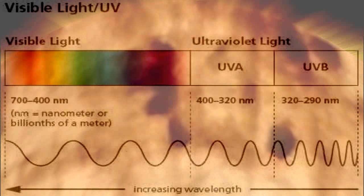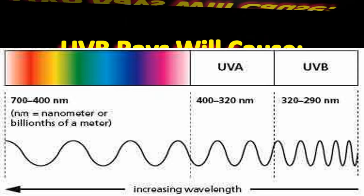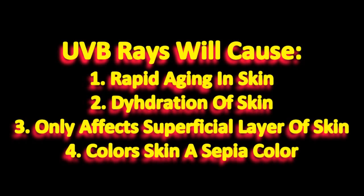After 500,000 hours of research, scientists concluded: the coloring of the shroud is due to rapid aging of the linen flax through dehydration. Only the superficial layer of the linen fibers are colored, and they were colored a sepia color. UVB rays meet all of those unique characteristics — they cause rapid aging in skin, they cause dehydration of the skin, they only affect the superficial layer, and they color skin a sepia color. If it does that to skin, it would do the same thing to linen. Congratulations — you just learned in part how the image on the shroud is formed.